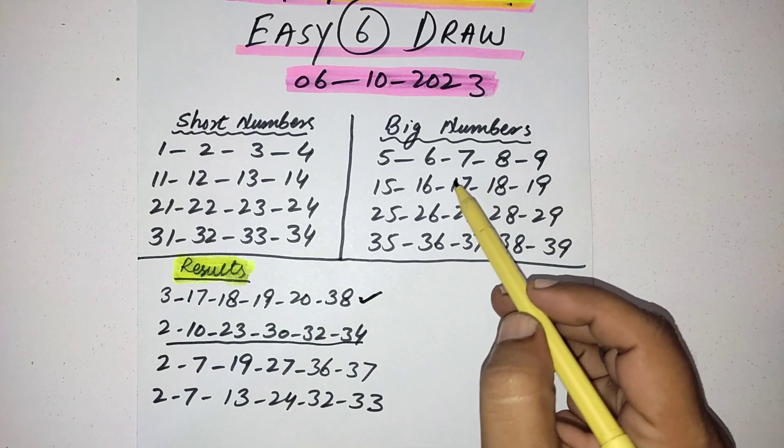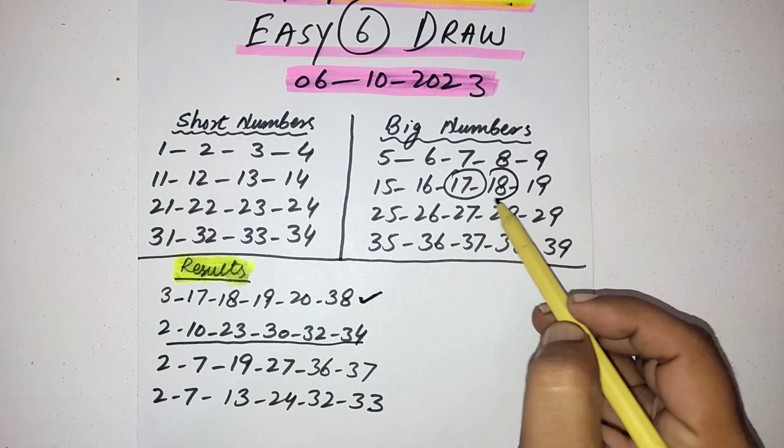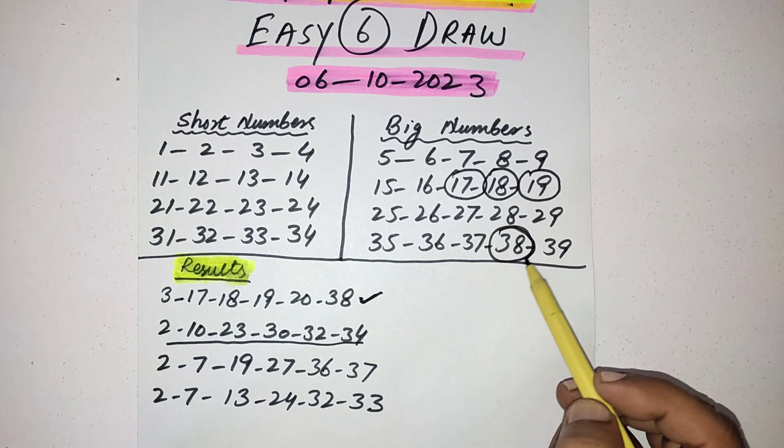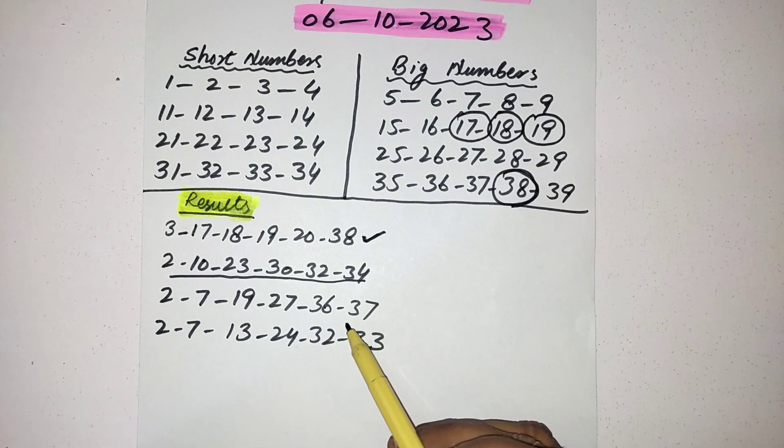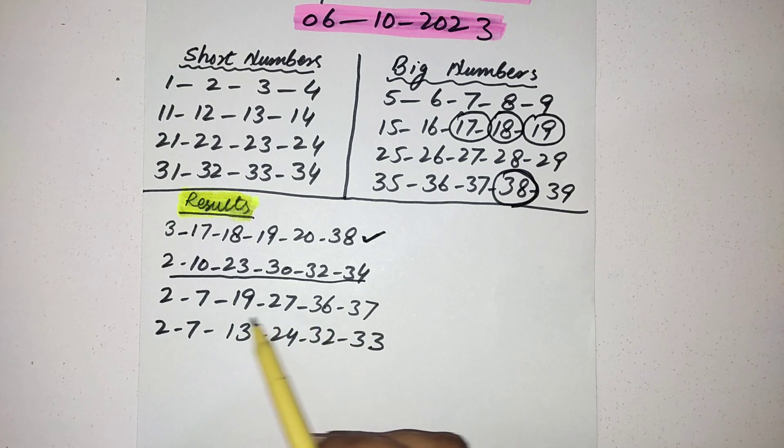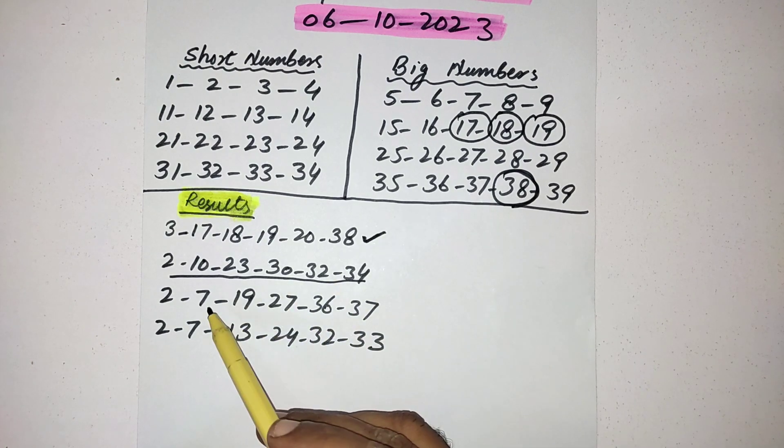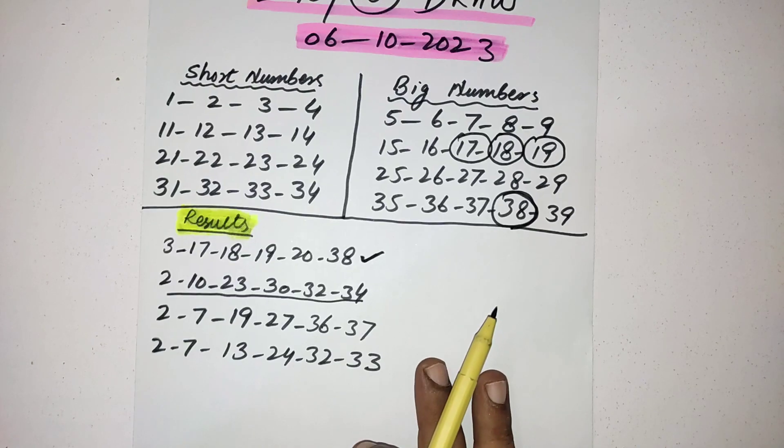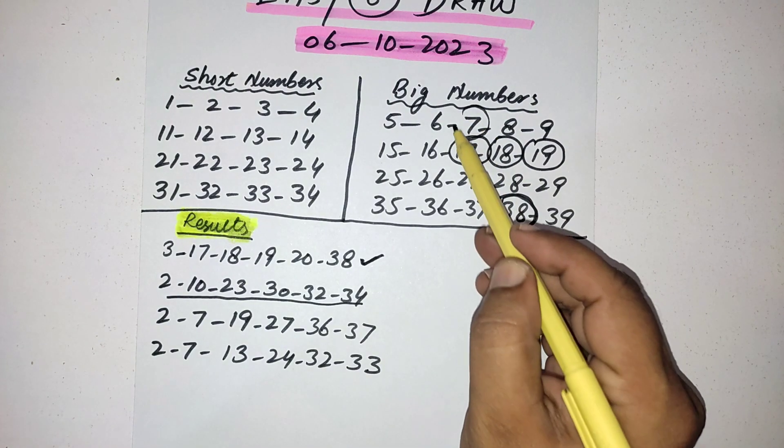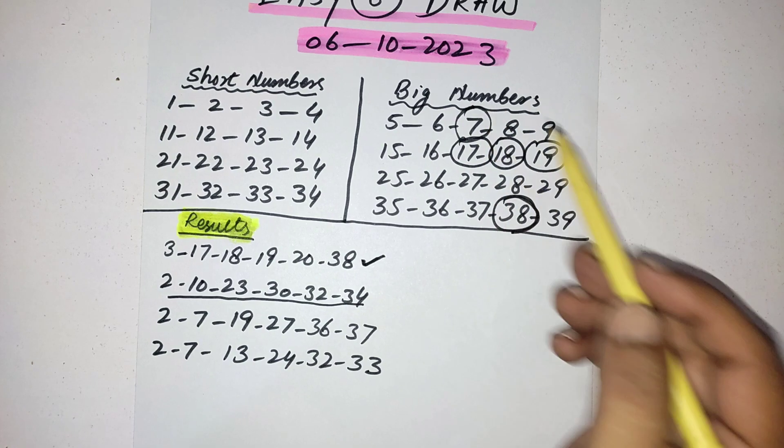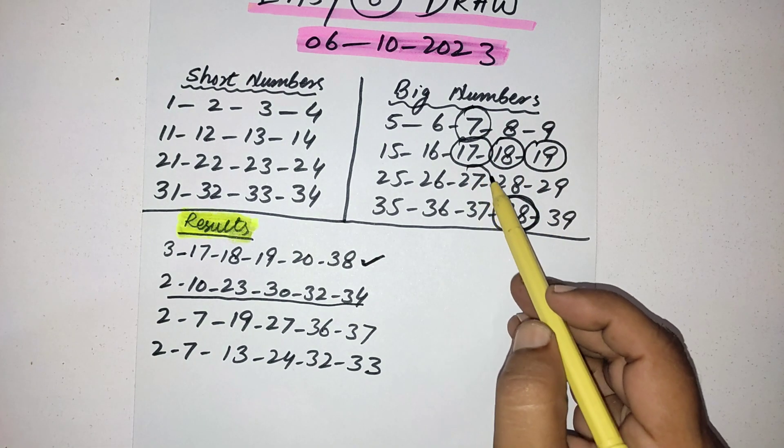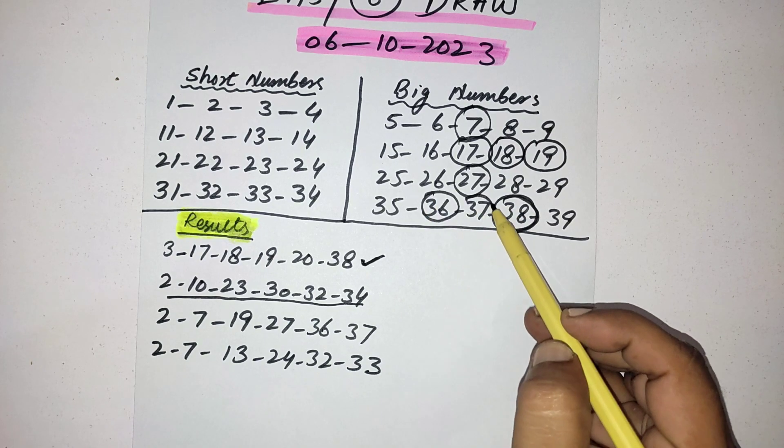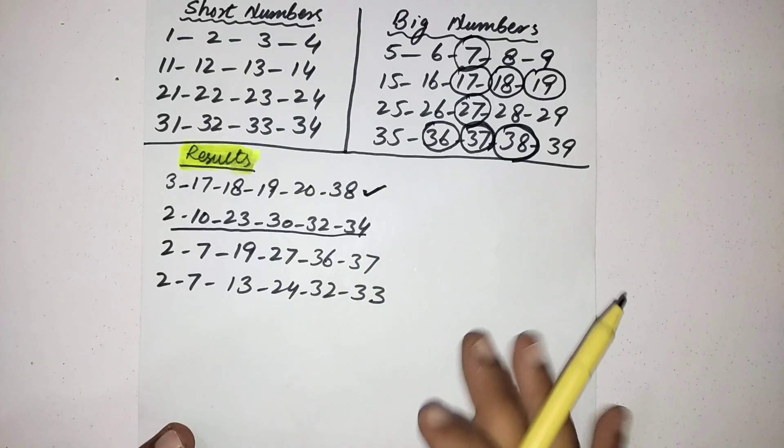Third draw you can see again the maximum numbers from big numbers: 7, 19, 27, 36, and 37. Then next you can see again they pick the short number maximum: 2, 13, 24, 32, and 33. Only seven number they pick from big numbers.